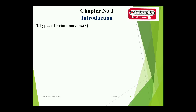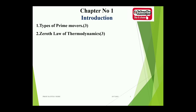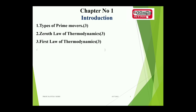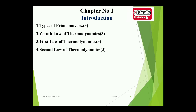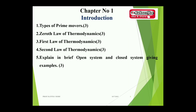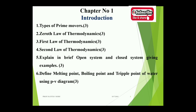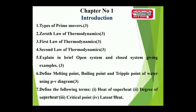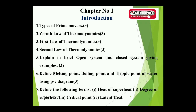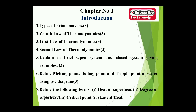From chapter one: types of prime movers, 3 marks. Zeroth law of thermodynamics, 3 marks. First law of thermodynamics, 3 marks. Second law of thermodynamics, 3 marks. Explain open systems and closed systems with examples, 3 to 4 marks. Define terms like melting point, boiling point, and triple point of water using a PV diagram, 3 to 4 marks. Define terms like heat of superheat, degree of superheat, critical point, and latent heat — sometimes a combination theory for 7 marks.